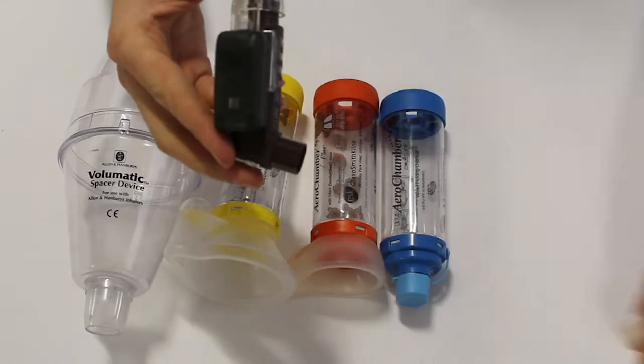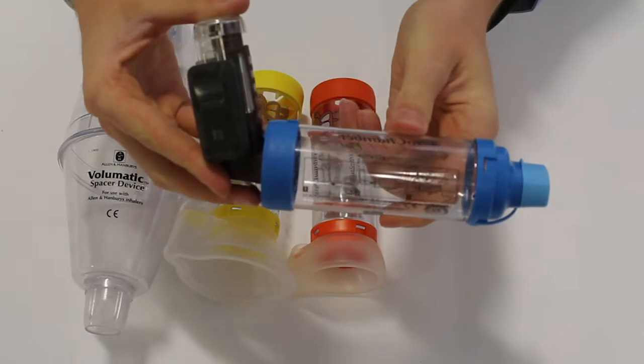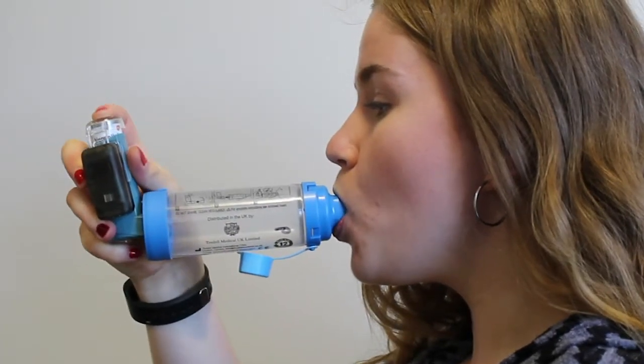Attach a spacer to the mouthpiece, taking the cover off first. The spacer should be inserted behind the teeth with the lips sealed tightly around it.